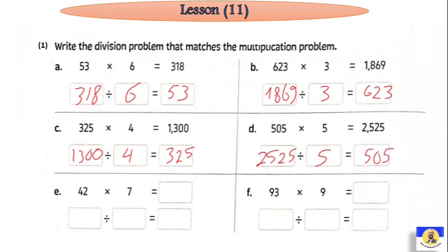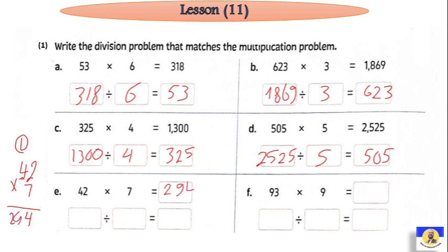Letter E: 42 by 7. We need to find the answer. We can solve it using any method — standard algorithm, area model distribution, or multiplication. Using standard algorithm: 7 by 2 equals 14, then 7 by 4 gives us 200 and 294. So 294 divided by 7 equals 42.